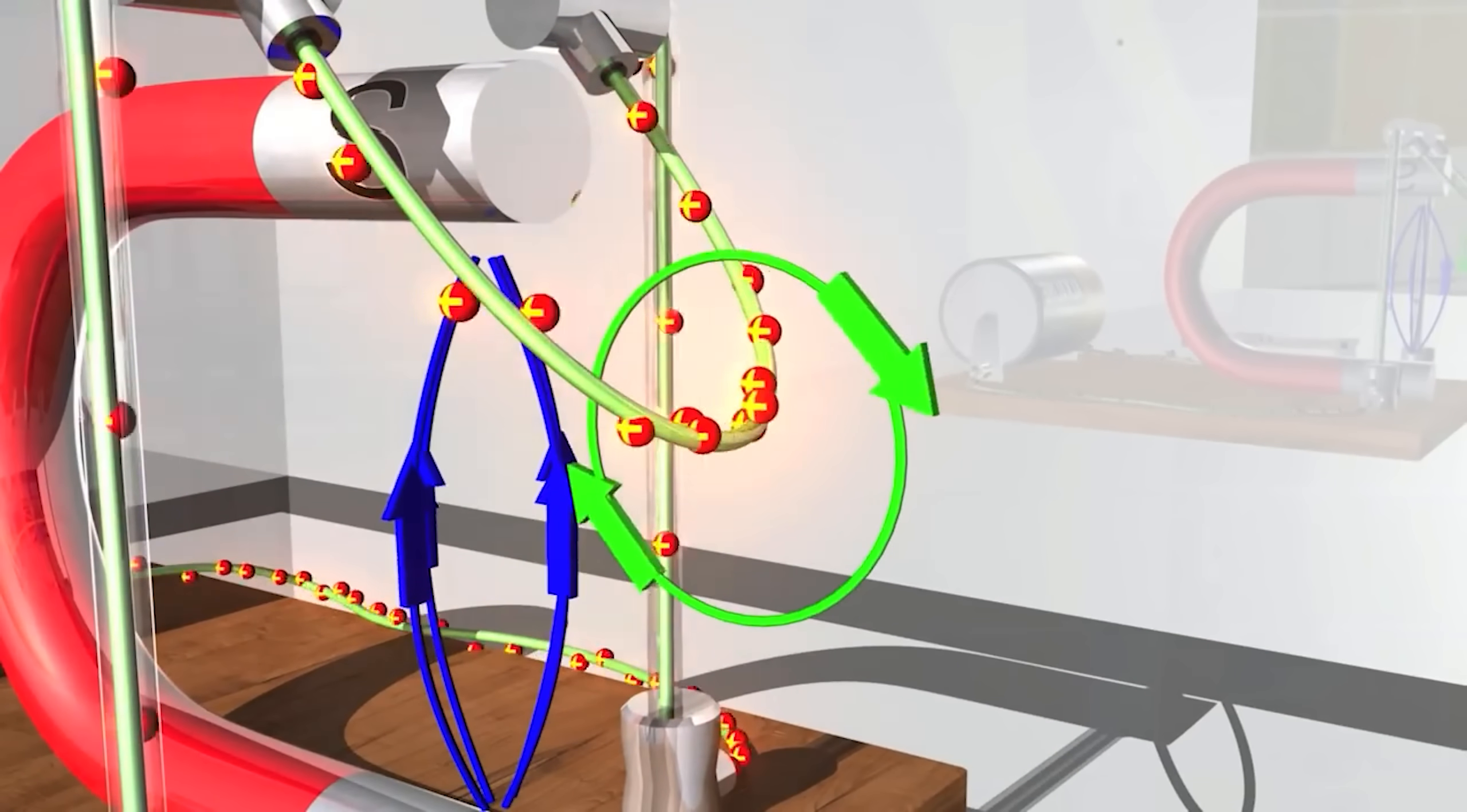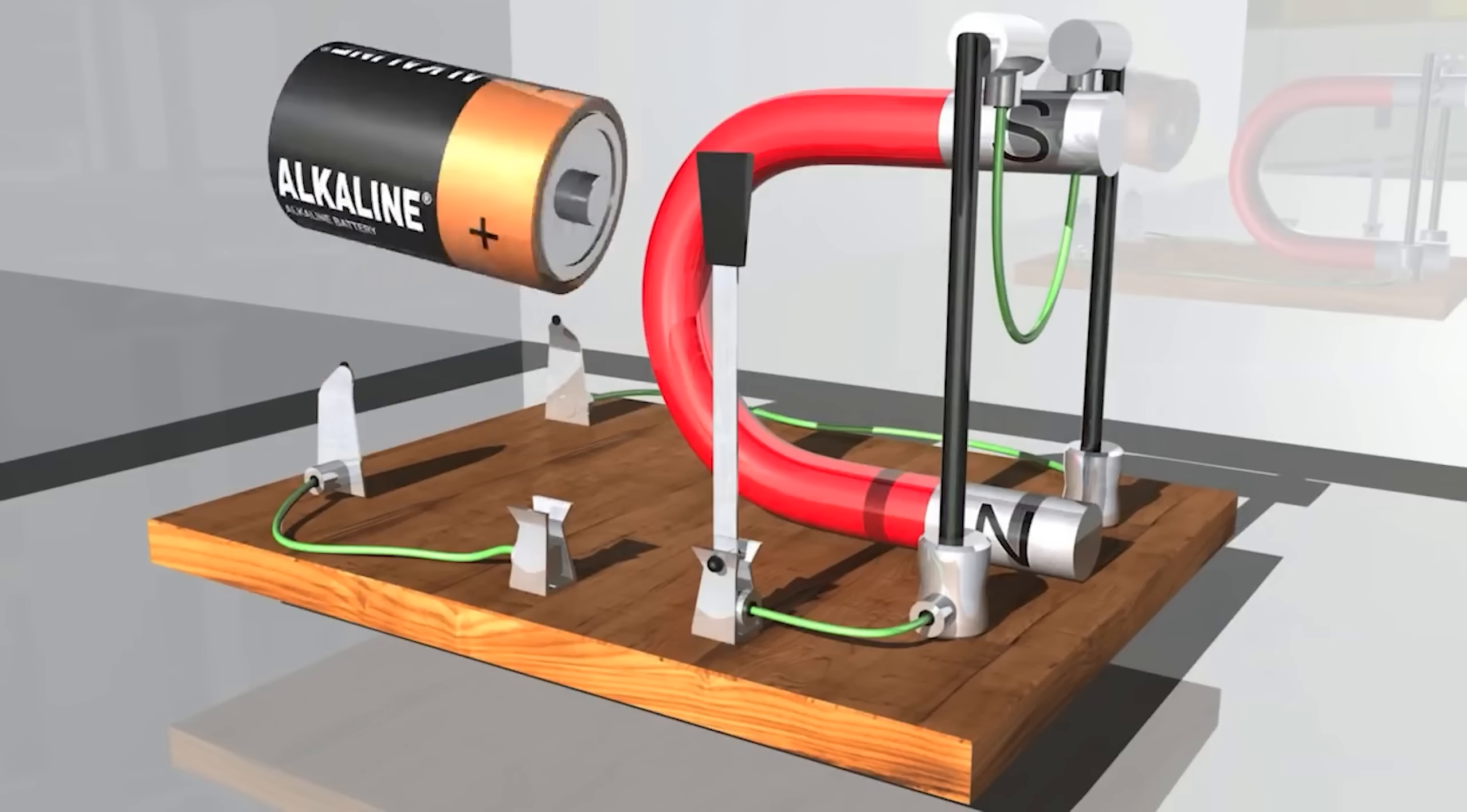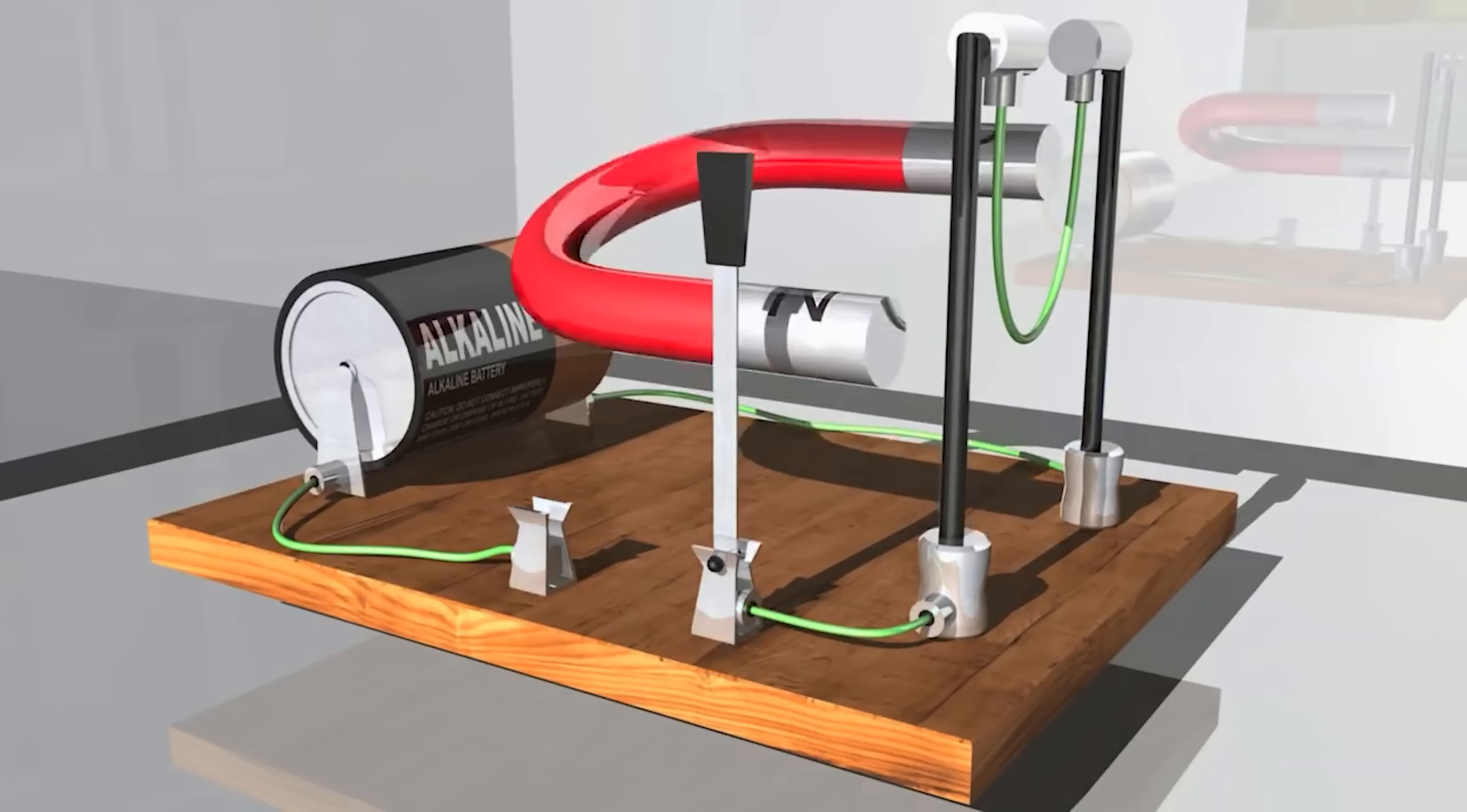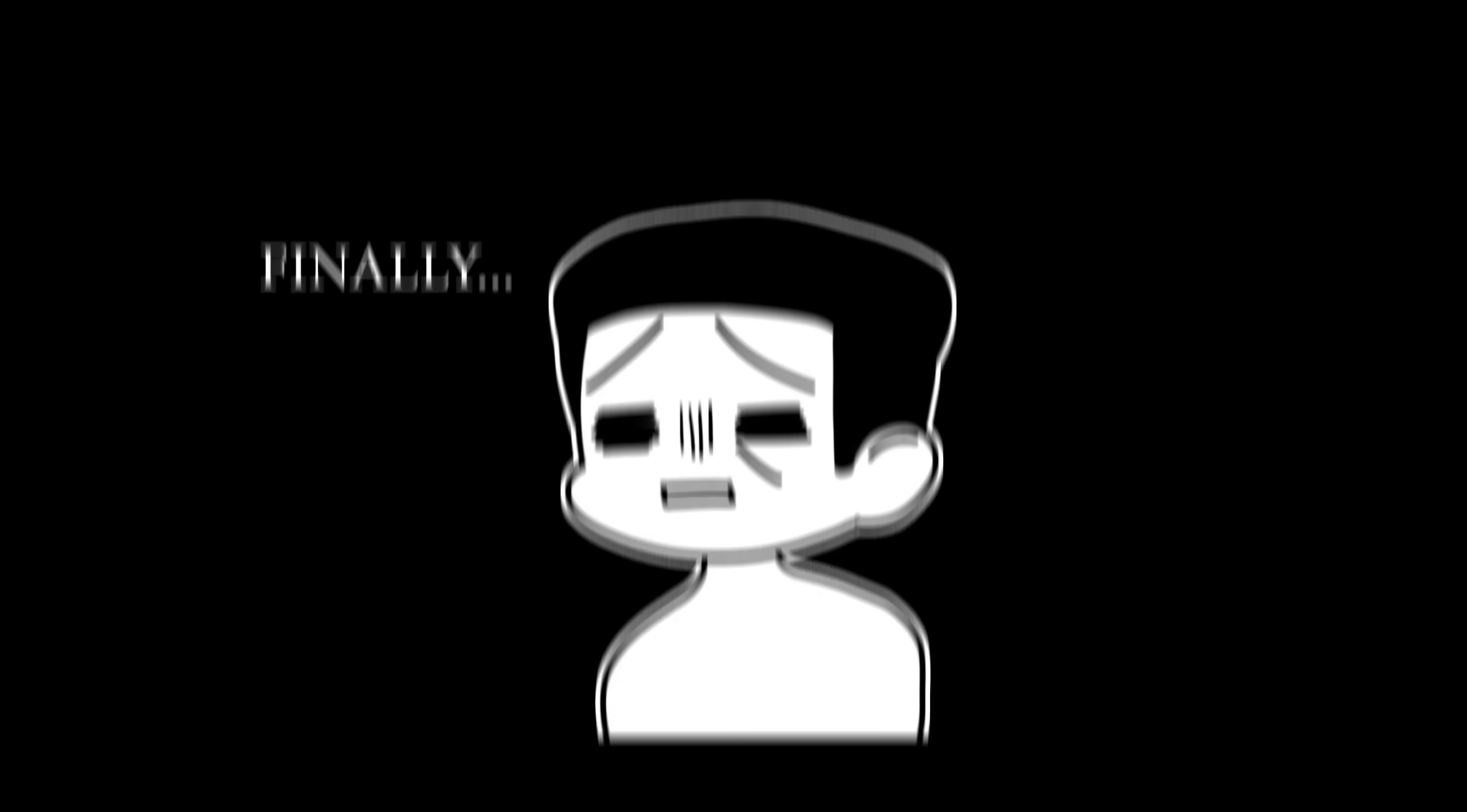And if we change the direction of the current by flipping the battery, its magnetic field will also change, switching from clockwise to counterclockwise and changing the direction of the Lorentz force too, just like I mentioned earlier. And yes, flipping the magnetic field of the magnet itself will also have the same effect.